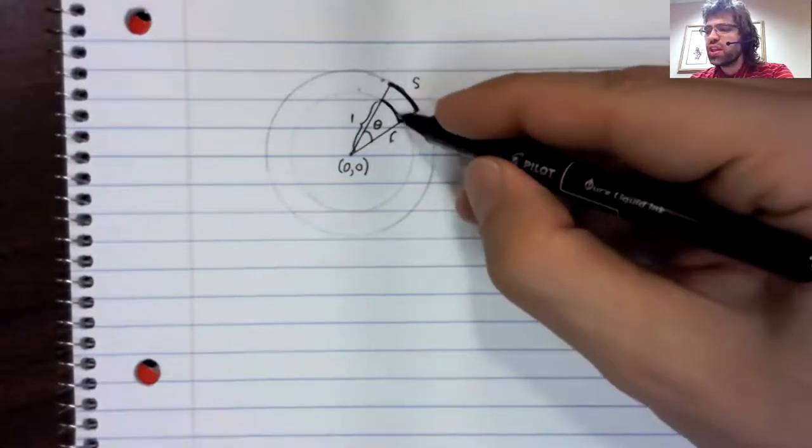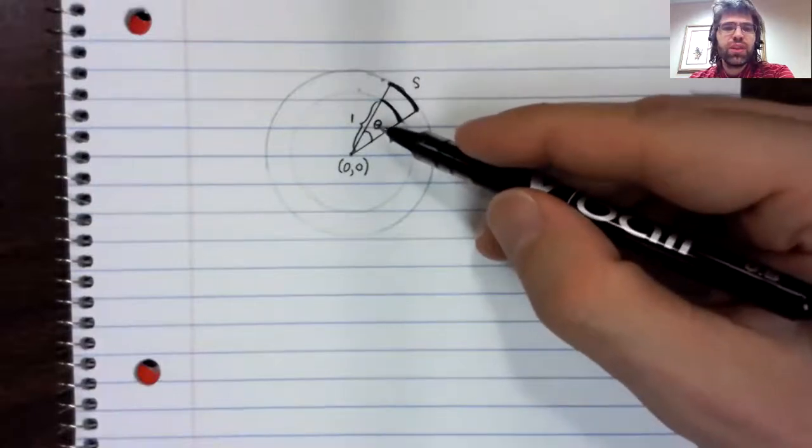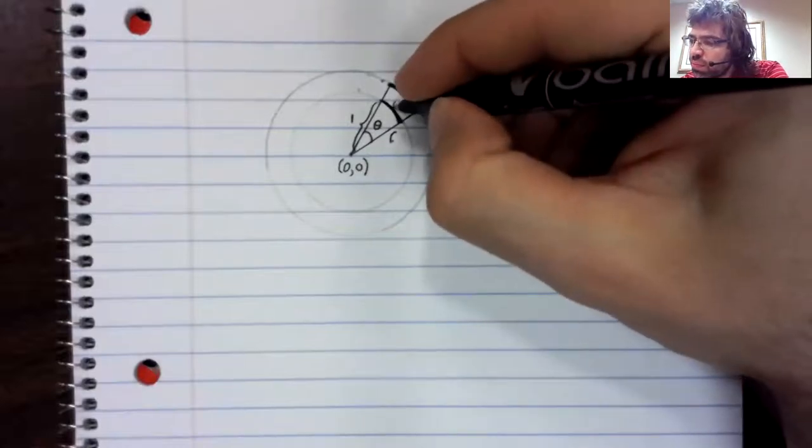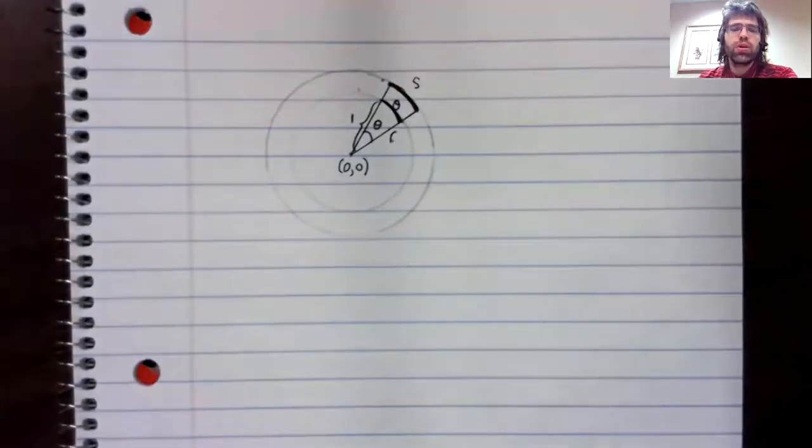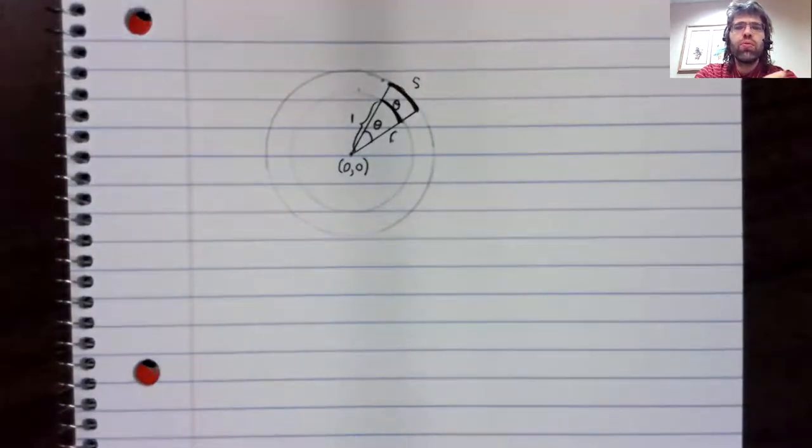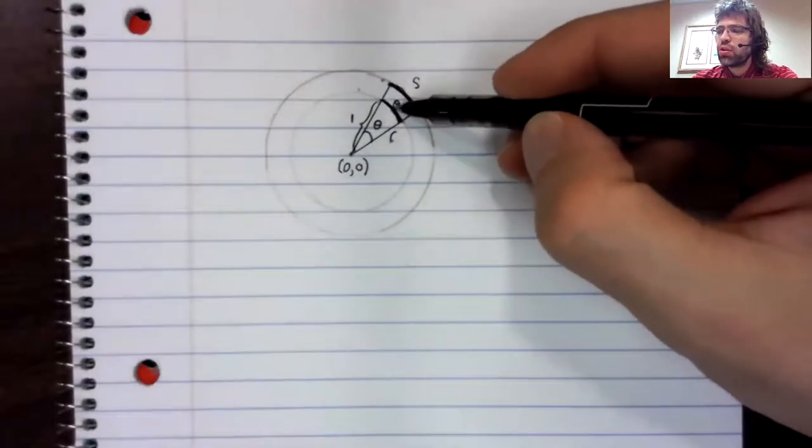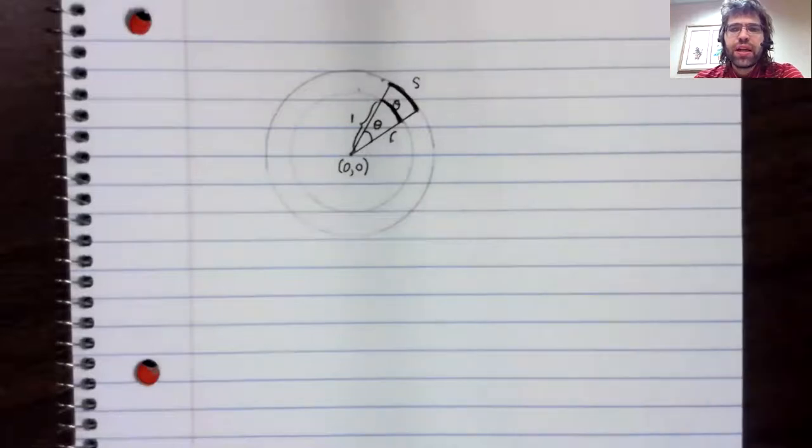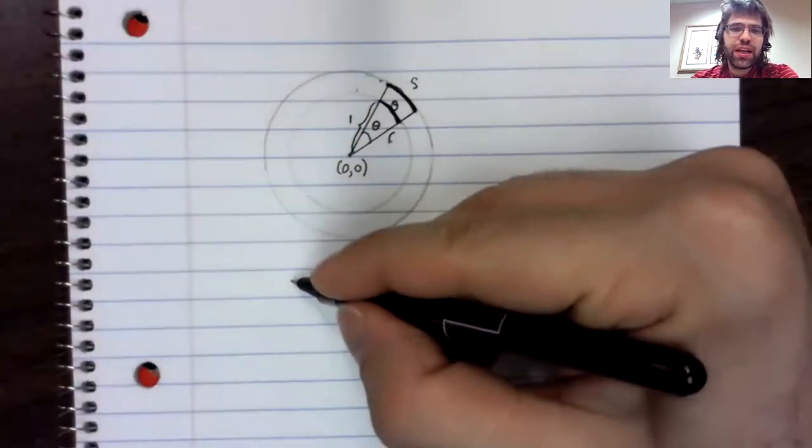What is this arc? Well, as long as theta is being measured in radians, the arc length and the angle on the unit circle are the same. So this arc has a length theta. And taking that statement about ratios and writing it down,